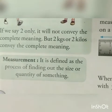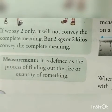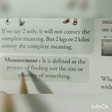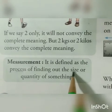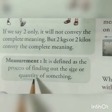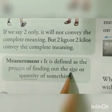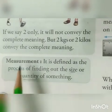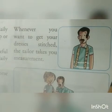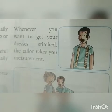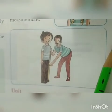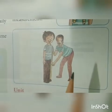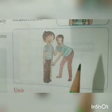Measurement is defined as the process of finding out the size or quantity of something. Which things you need, in which size or in which quantity — that is measurement. Whenever you want to get your dress stitched, the tailor takes your measurement. First of all, the tailor takes the measurement of your body, and after taking the measurement, he will stitch your dress.